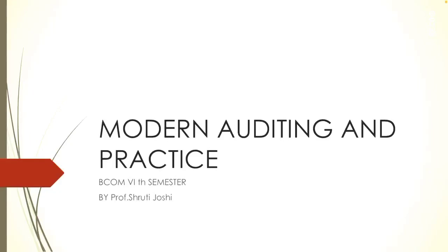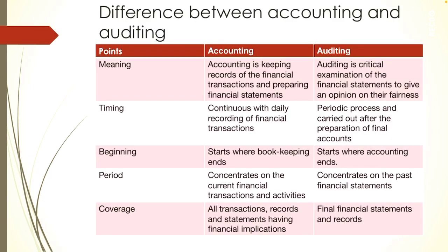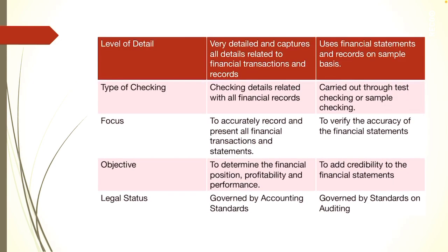Greetings. In the last class we discussed the difference between accounting and auditing. As I mentioned, there are 25 points which differentiate accounting and auditing. In the last class we discussed the first 10 points: meaning, timing, beginning, period, coverage, level of detail, type of checking, focus, objective, and legal status.